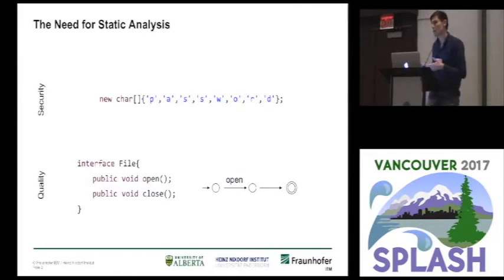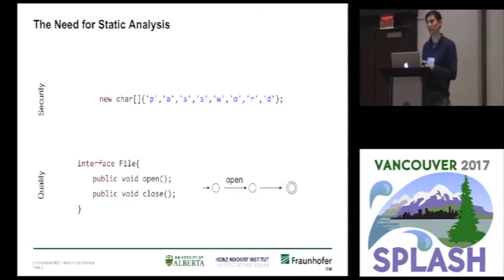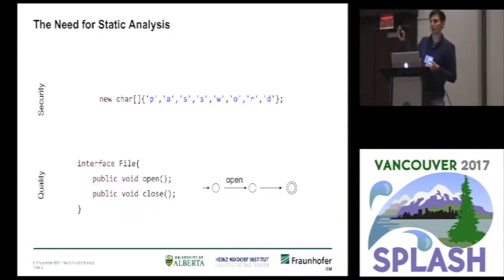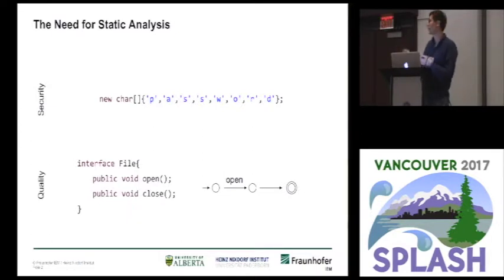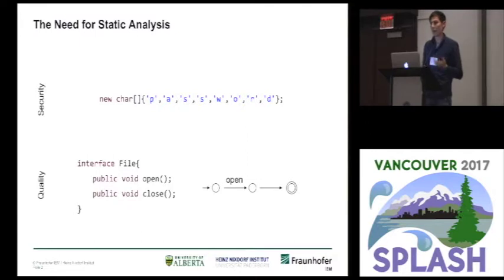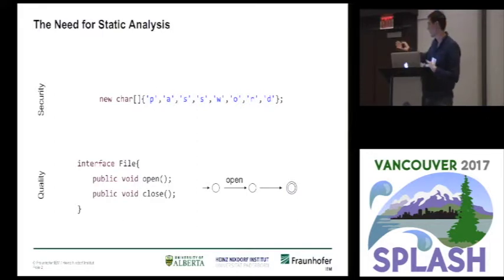While that could be a relatively simple static analysis, there are more sophisticated analyses that we also require — for example, for quality checks that are way more complex and really difficult to get in an efficient and precise manner at the same time. One such example is a type state analysis. A type state analysis reasons about usage patterns of APIs in your code. For example, we see here a file interface that has two methods: open and close. We want to ensure that along any program execution, our file object will be at the accepting state of the finite state machine at the end.